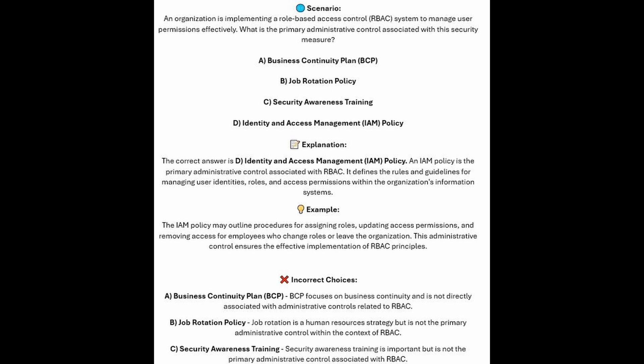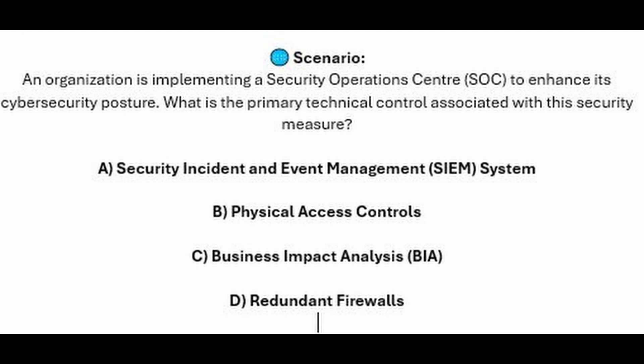For the incorrect answers: Business Continuity Plan or BCP focuses on business continuity and is not directly associated with administrative controls related to RBAC. Job Rotation Policy is a human resource strategy, but is not the primary administrative control within the context of RBAC. And Security Awareness Training is important, but is not the primary administrative control associated with RBAC.